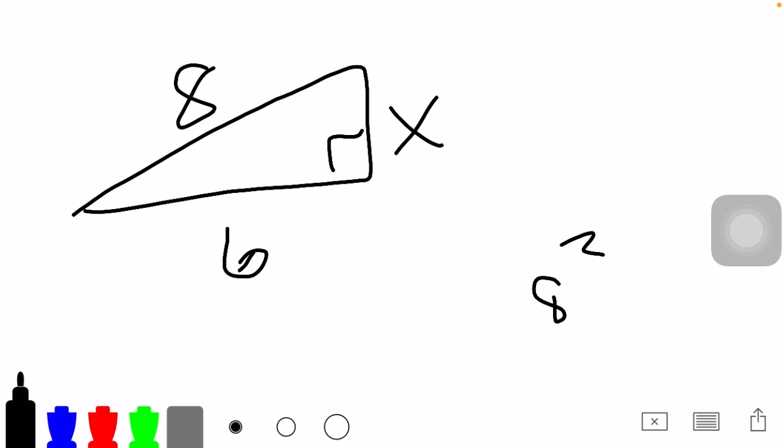And A and B, it doesn't matter which side we call A, or which side we call B, but usually the shorter side, we're going to call it A. So, we're going to have X squared plus 6 squared is equal to 8 squared. Now, what we want to do is for the numbers, we want to get these all squared up.